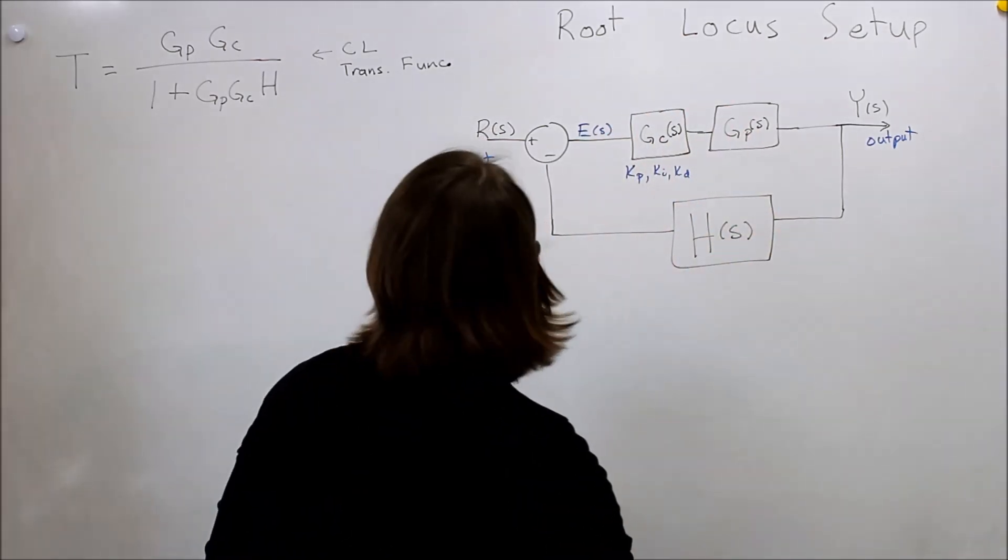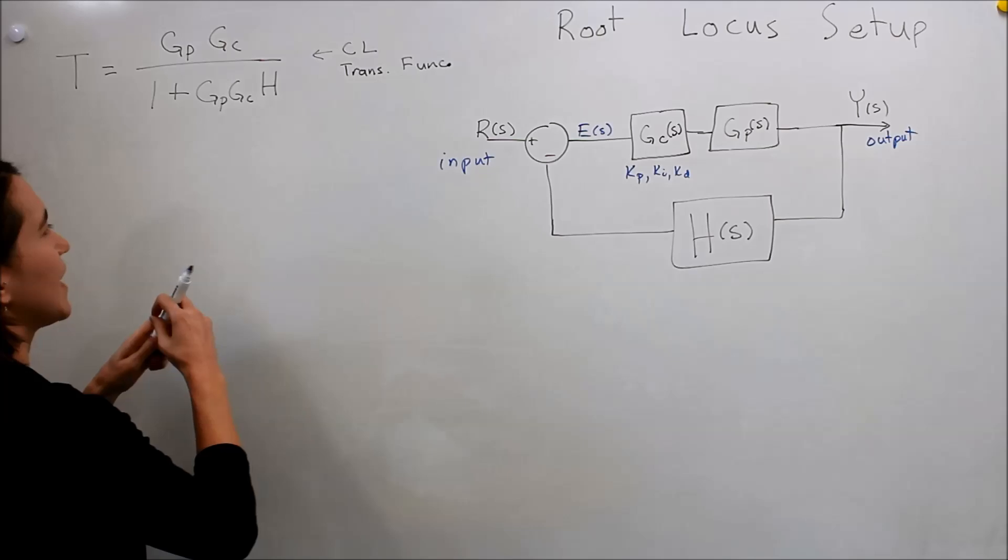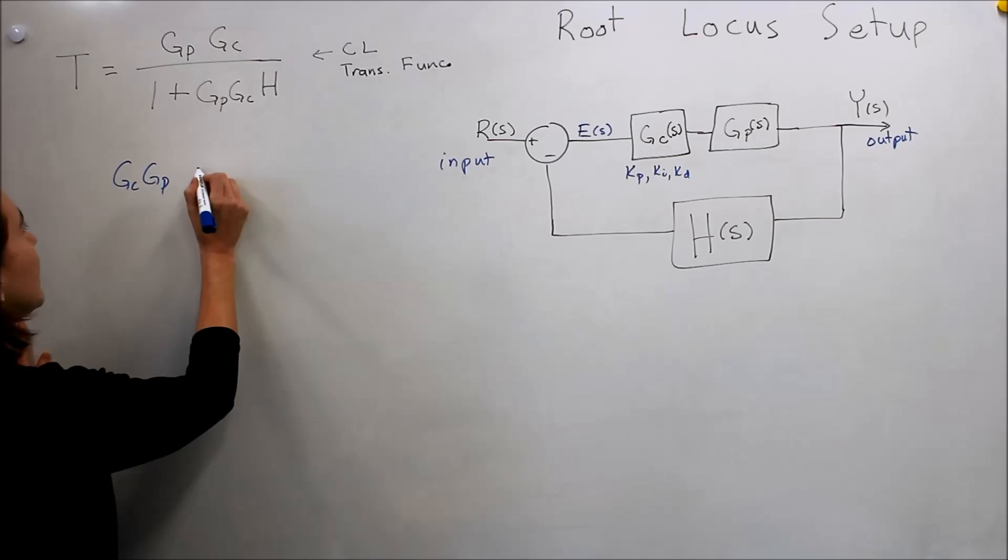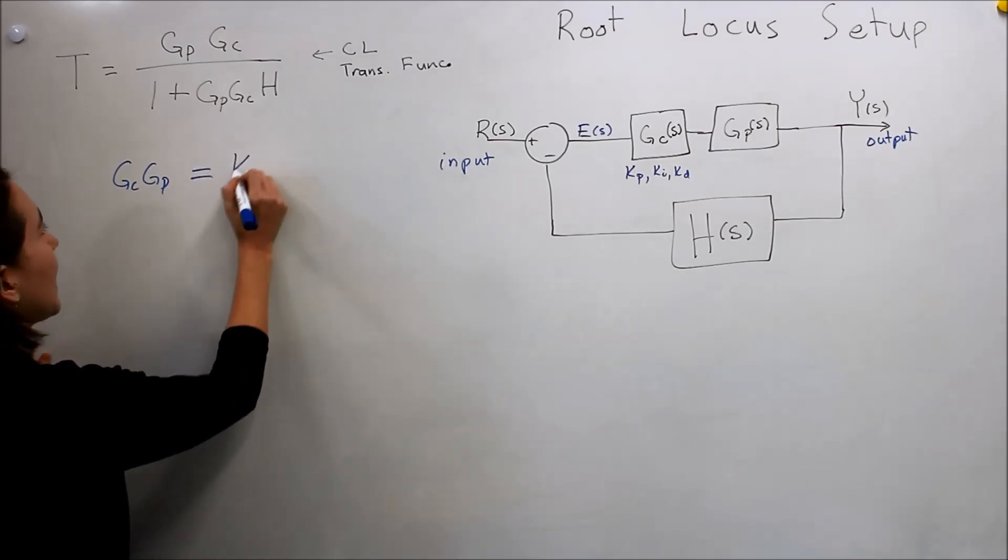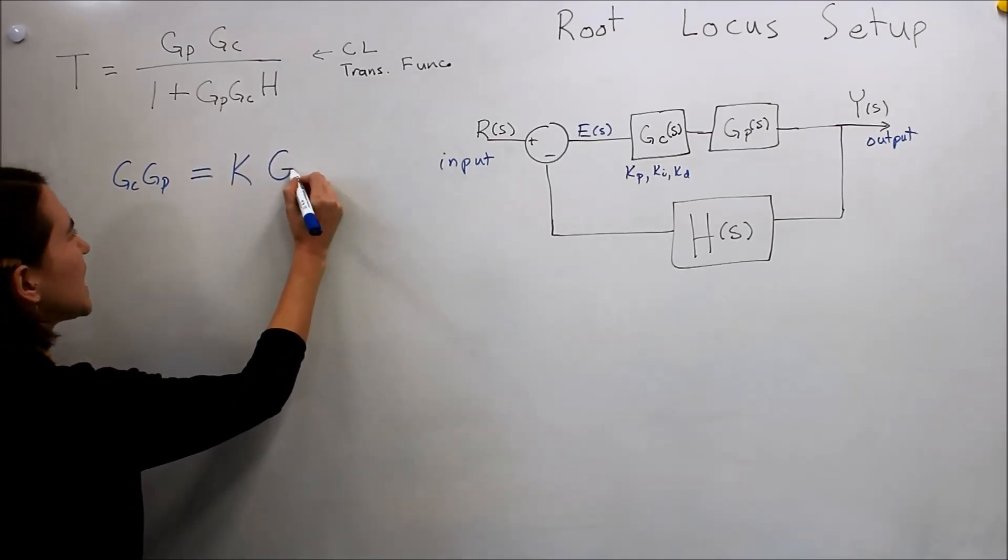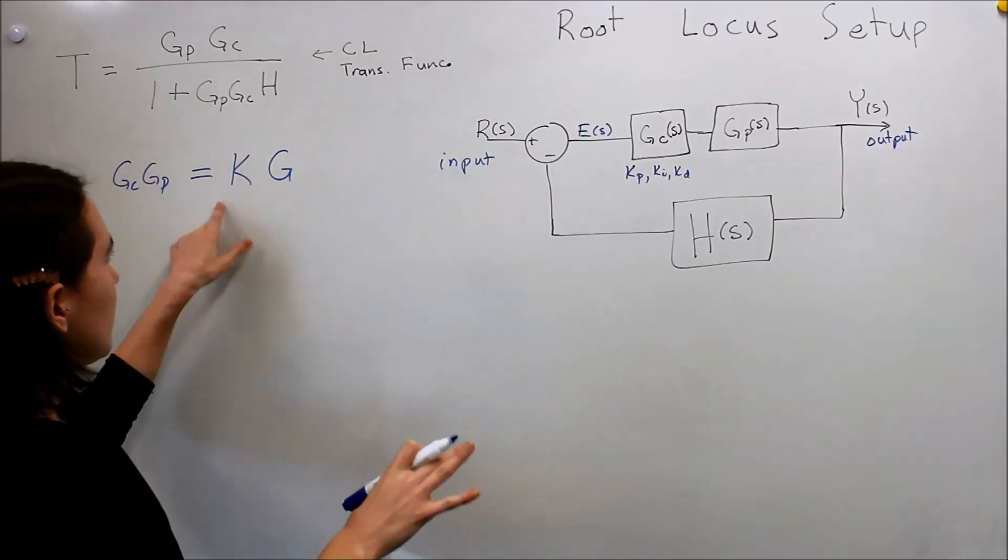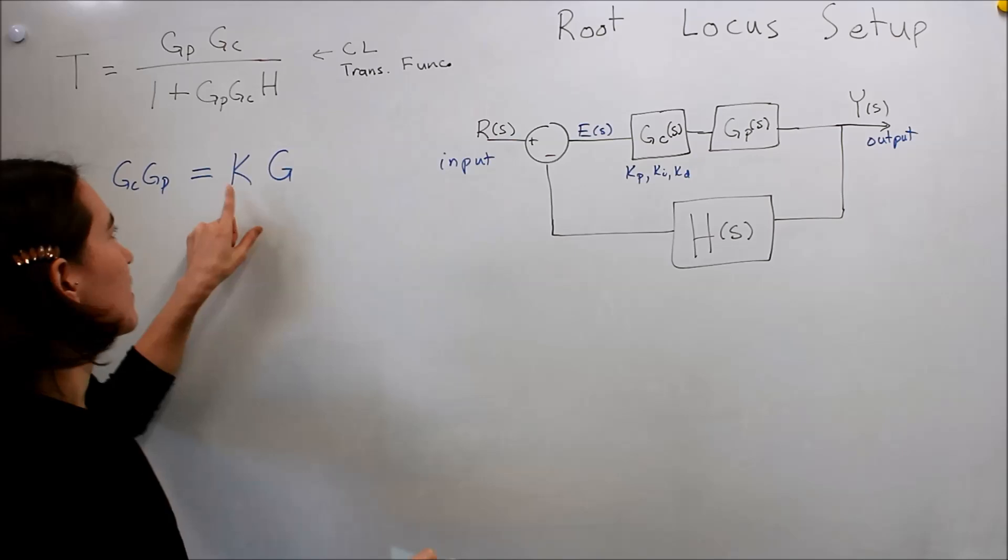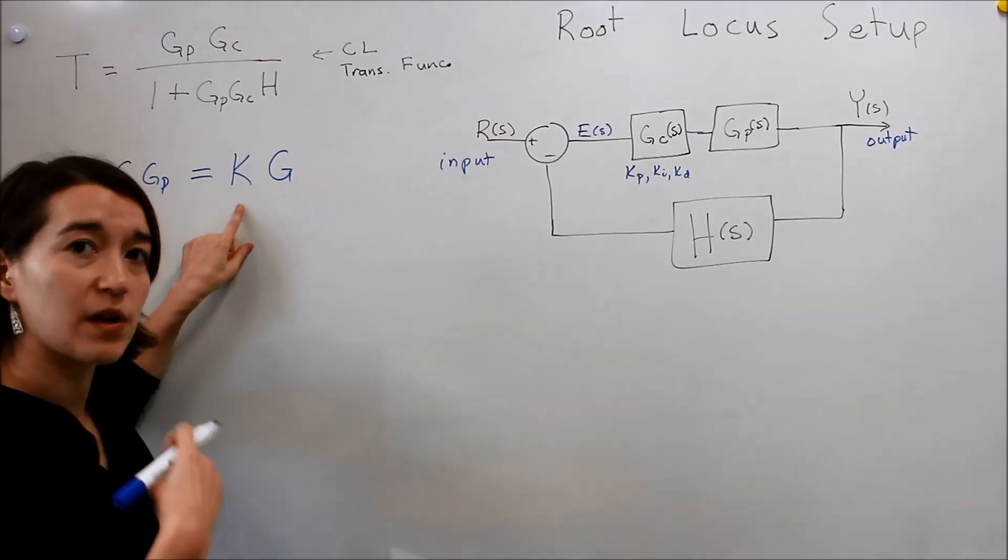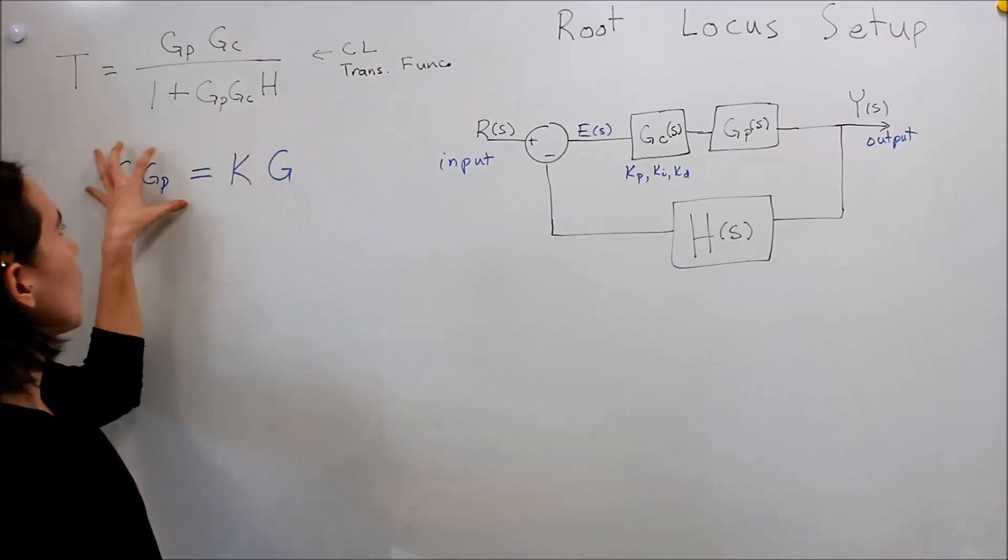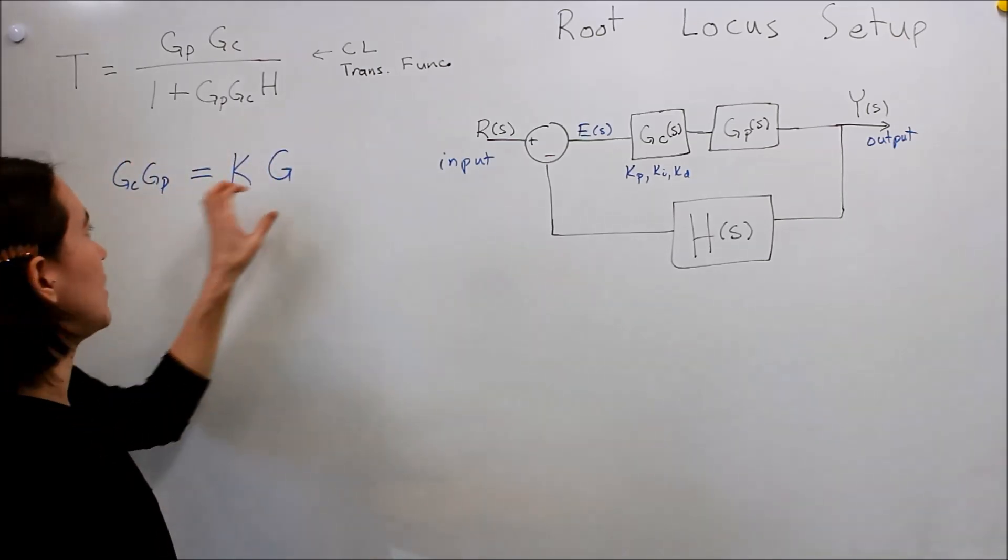So what we're going to do is essentially change Gc, Gp, multiplied together, into K, and we're going to call this a general G, with no subscript, so try not to get confused. But we're going to move it into this form, because we're going to start varying K, so this is our independent variable, it's a scalar, and then we're going to lump all of the transfer function terms into this G.